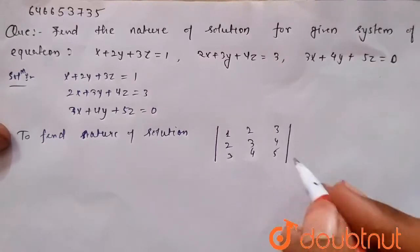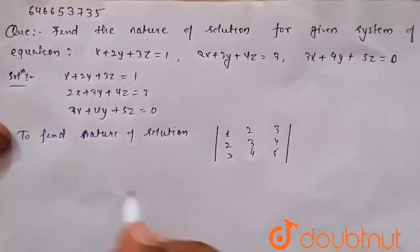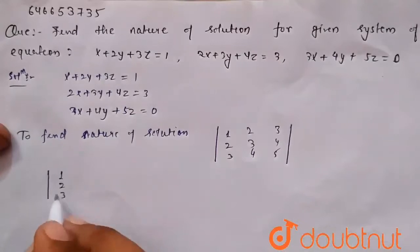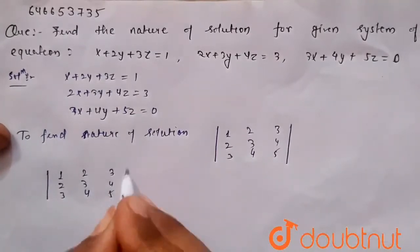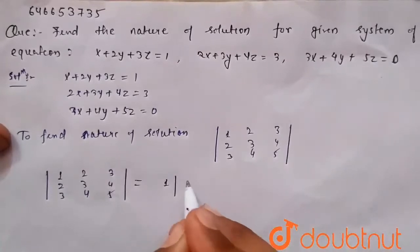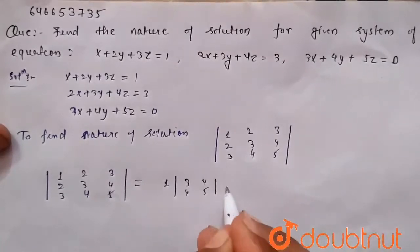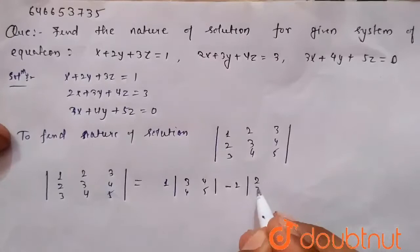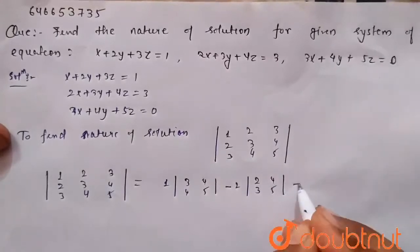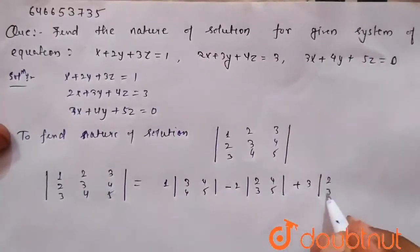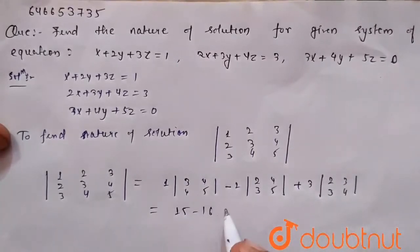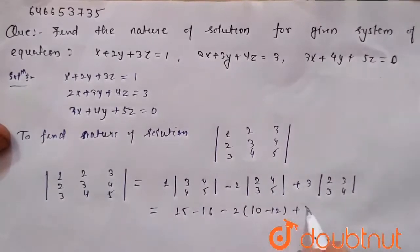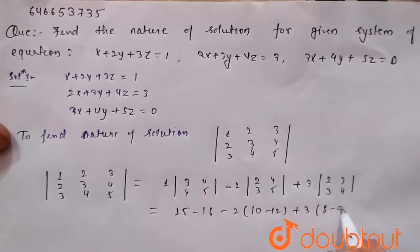So we have to find this determinant value, open with 3, 4, 4, 5 minus 2, 2, 3, 4, 5 plus 3, 2, 3, 3, 4. So 15 minus 16 minus 2, 10 minus 12 plus 3, 8 minus 9.